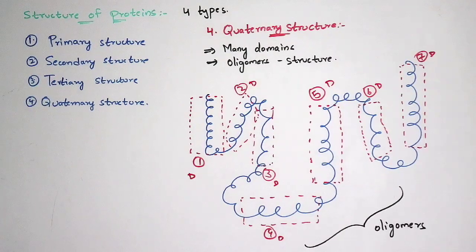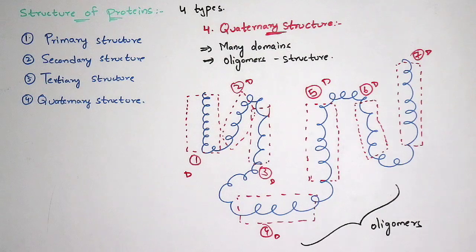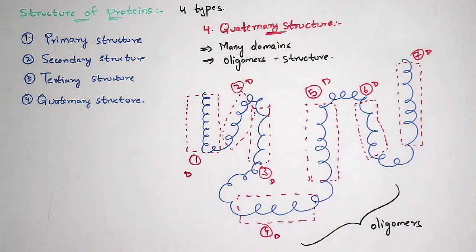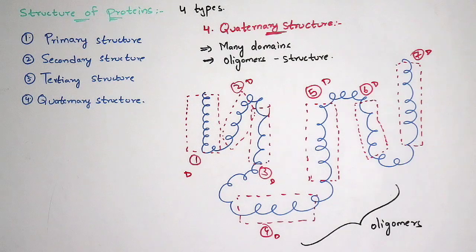Coming to the last, quaternary structure. In the quaternary structure there are numerous domains — many domains bind with each other and form a structure called an oligomer. Domain is defined as a group of amino acids which mainly forms a polypeptide chain — one polypeptide chain equals one domain. Many domains bind with each other and form the oligomer structure. This structure also contains hydrogen bonds similar to the previous structures.